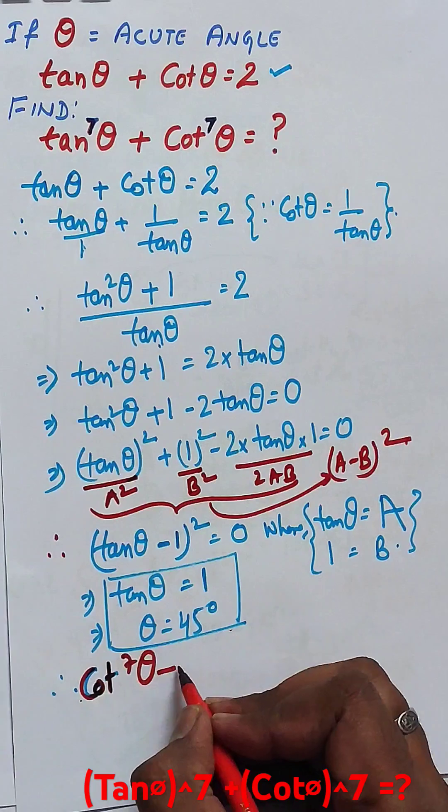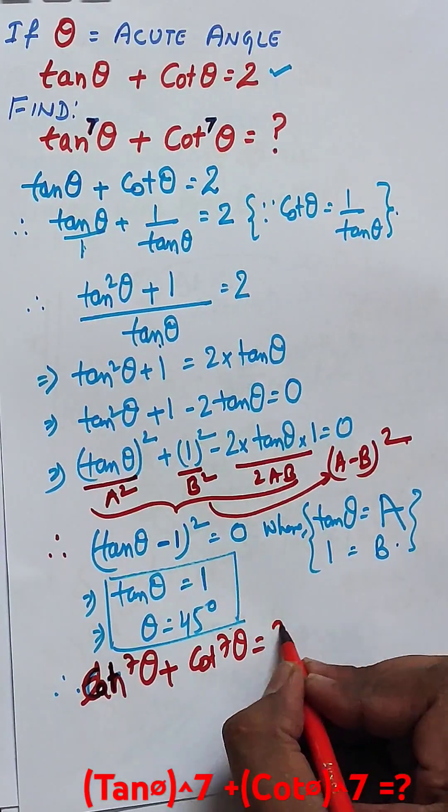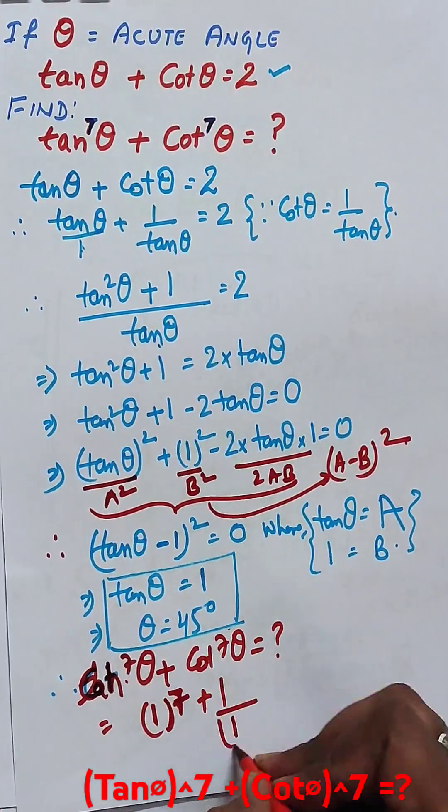Therefore, tan^7 theta plus cot^7 theta equals 1 plus 1 by 1, which equals 1 plus 1, equals 2.